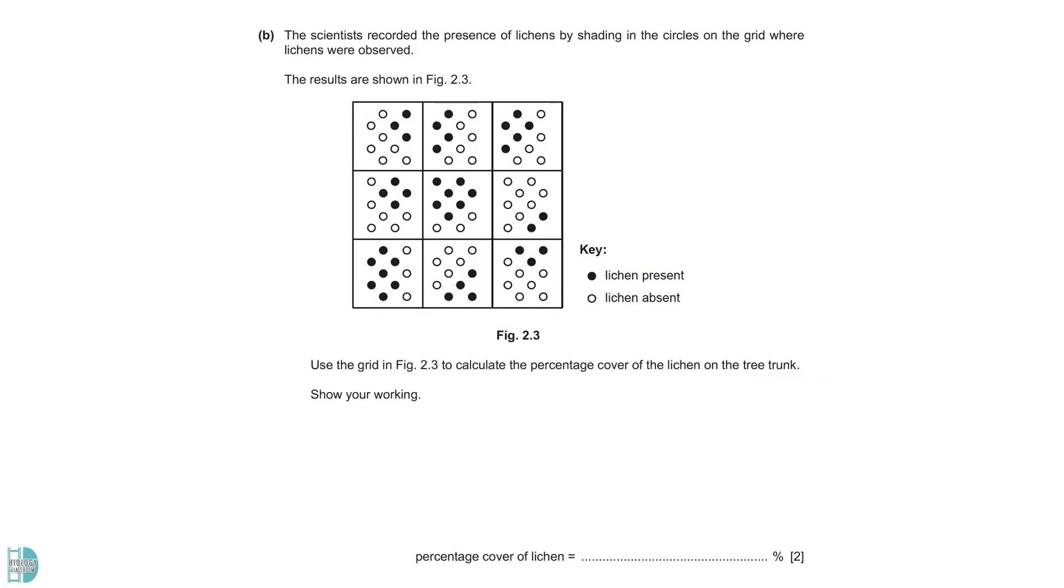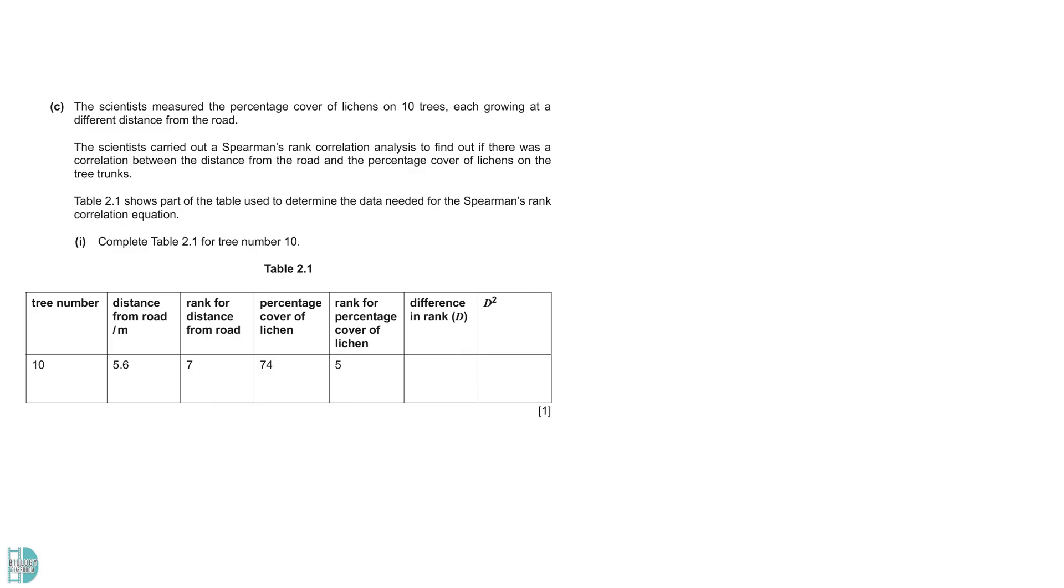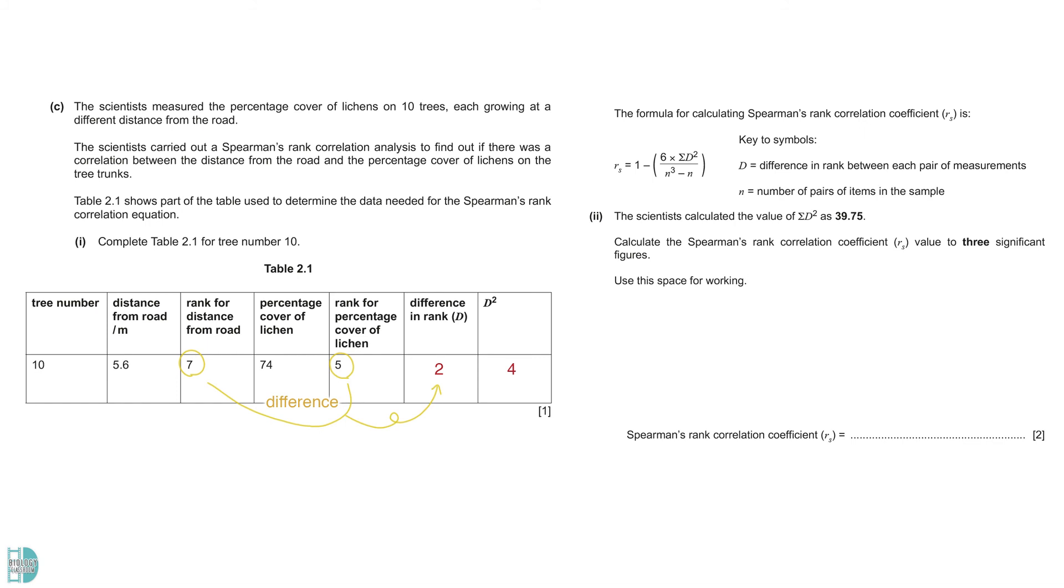B wants you to calculate the percentage cover of lichens on the tree trunk. 39 out of 90 dots are black. So, the percentage cover is 39 over 90 times 100. C is about the Spearman's rank correlation coefficient. The ranks for the variables are 7 and 5 respectively. The difference is 2 and d squared will be 4. Then, you are asked to calculate the coefficient. The sum of d squared is given. N is equal to 10 as 10 trees were sampled. Substituting the values in the equation will give you 0.759. Remember to show your answer in 3 significant figures.